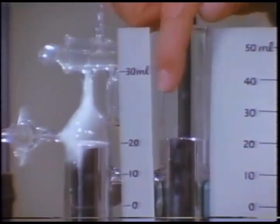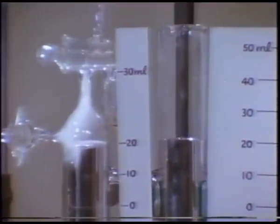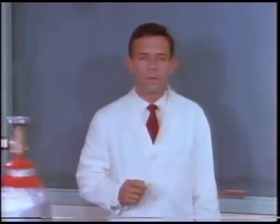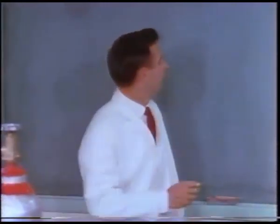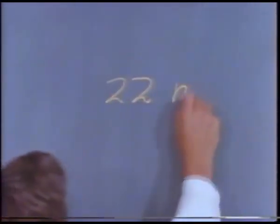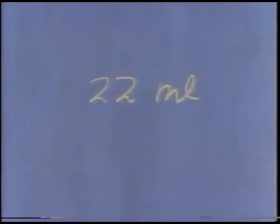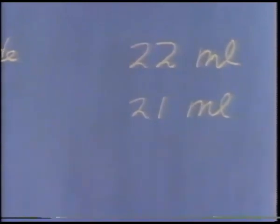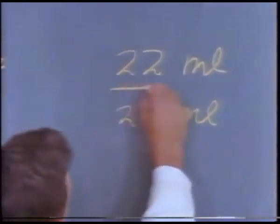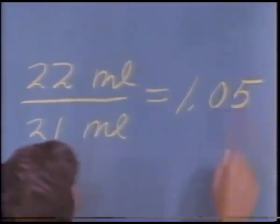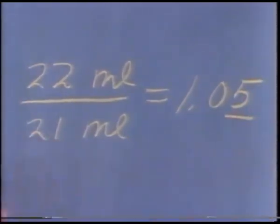The reading in the left chamber is 21 milliliters. In the right chamber, the reading is 22 milliliters. Now we have quantitative information about the way these two gases combine: hydrogen chloride, 22 milliliters plus or minus 1, and ammonia, 21 milliliters plus or minus 1. The ratio of these two volumes is 1.05, and this last figure is not significant.